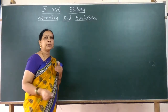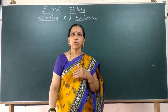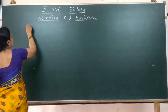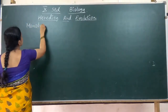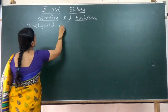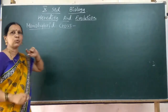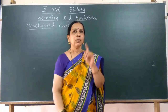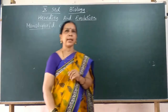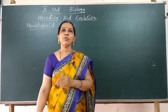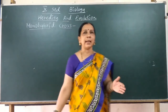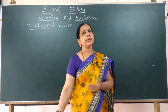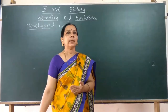One important experiment Mendel conducted to formulate the laws of heredity is the monohybrid cross. Mono means one — a cross between two pea plants which differ in only one specific character. We discussed in the last class some contrasting forms of characters Mendel selected in garden pea plants. He used garden pea plants for his experiments because he got some advantages from them.